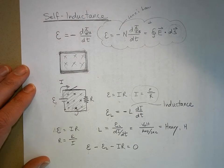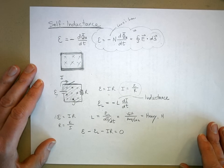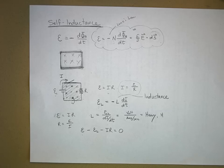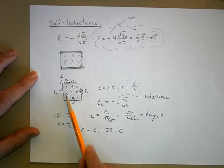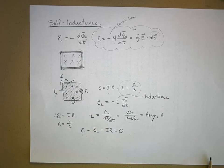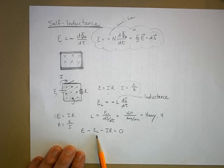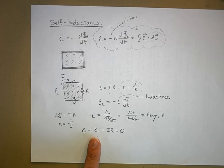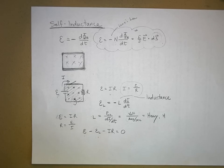To review: we have a voltage drop throughout the circuit because we're changing the current. When the current reaches its maximum and stops changing, this voltage drop goes to zero and we're back to regular Ohm's law. This extra voltage drop is transient — it changes with time and eventually goes away, similar in spirit to what happens with an RC circuit.